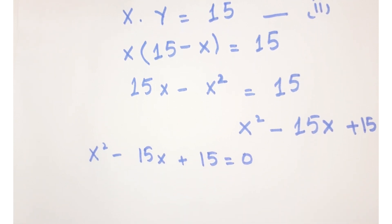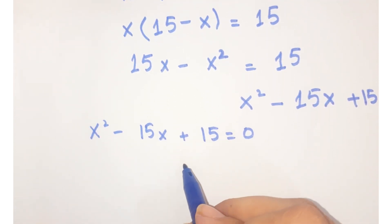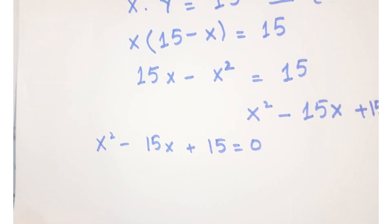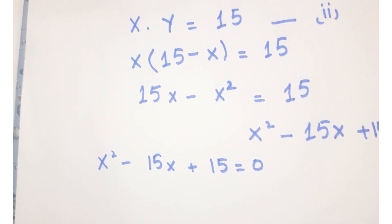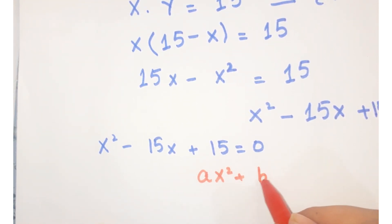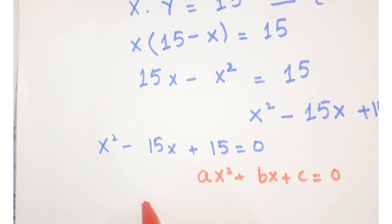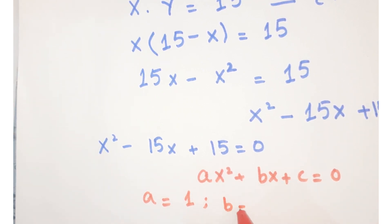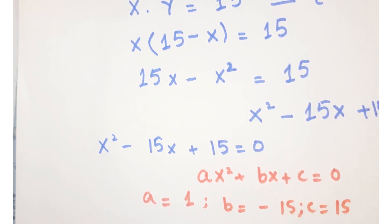This equation x² minus 15x plus 15 equals 0 is a quadratic equation. Comparing with the standard quadratic equation ax² plus bx plus c equals 0, we have a equals 1, b equals minus 15, and c equals 15.